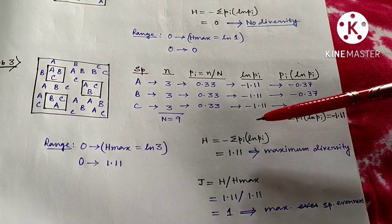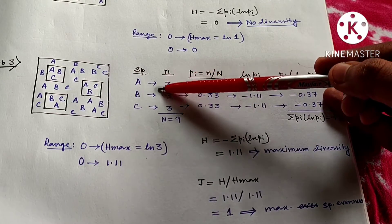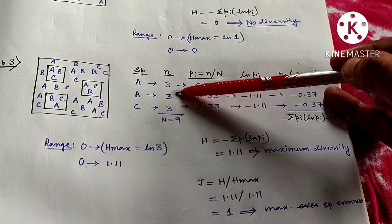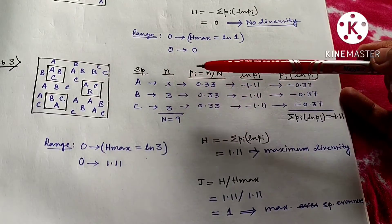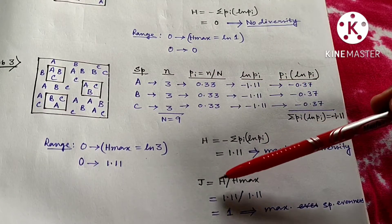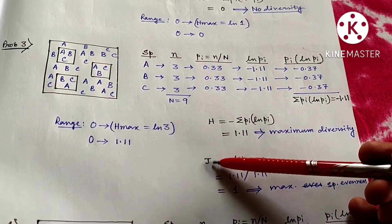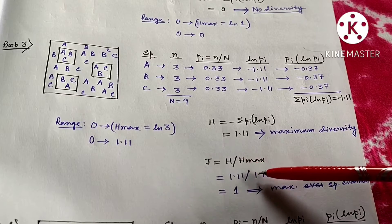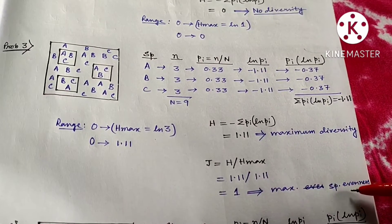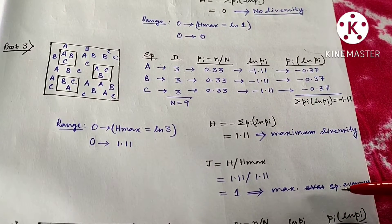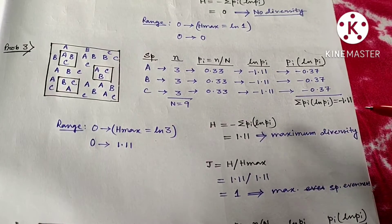Without doing all the calculations, you can also say there will be maximum diversity because all the species are evenly distributed — evenness is maximum for this community. You can also find out the evenness index, Pielou's J, by dividing observed H by H_max. Here both are the same, so J = 1, which indicates maximum species evenness. Whenever there is maximum species evenness in a community, there will be maximum diversity.